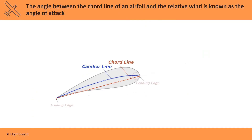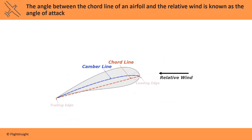When looking at the wing from the side, we can identify a line connecting the leading edge to the trailing edge of the wing called the chord line. As the wing flies through the atmosphere, the direction of movement of air relative to the aircraft is identified as the relative wind. The angle between the chord line of the airfoil and the relative wind is known as the angle of attack.